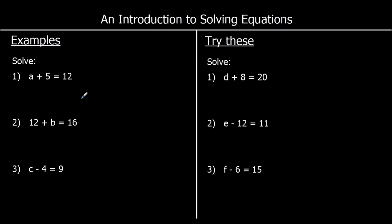In an equation, because both sides are equal, we can do the same thing to both sides and they will stay equal. So if I want to get a by itself, at the moment I've got a plus 5. So if I take away 5, I'll get a by itself. And if I take away from one side and the other side, the equation will stay equal. So a plus 5 minus 5 gets a by itself — I've just got a. And 12 minus 5 is 7. So a is equal to 7.